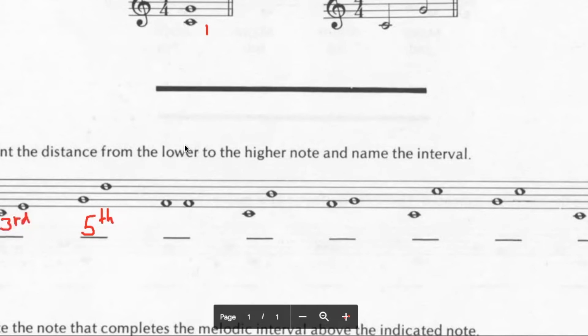So let's try this again. First note is one. Second space is two. Next line is three. Next space is four. Next line is five. So the distance here would be a fifth. Because we're counting the distance.